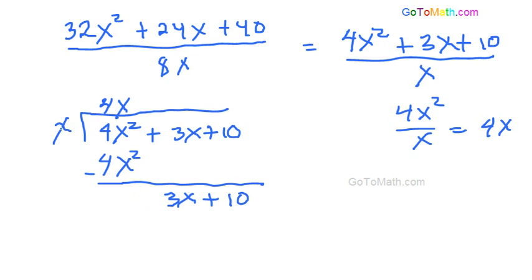And then we do the same thing now. Instead of with 4x squared, we do it with 3x. So x goes into 3x and think of it this way as 3x over x. And simplifying this down, what do you get? You get 3.